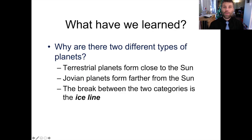We have these two different types of planets that form in different parts of the Solar System, and that's why we have this separation between the rocky, Earth-like planets that are found close to the Sun and the gaseous, Jovian planets that are found far from the Sun. And the break between these two categories is a location within the protoplanetary disk that we call the ice line.